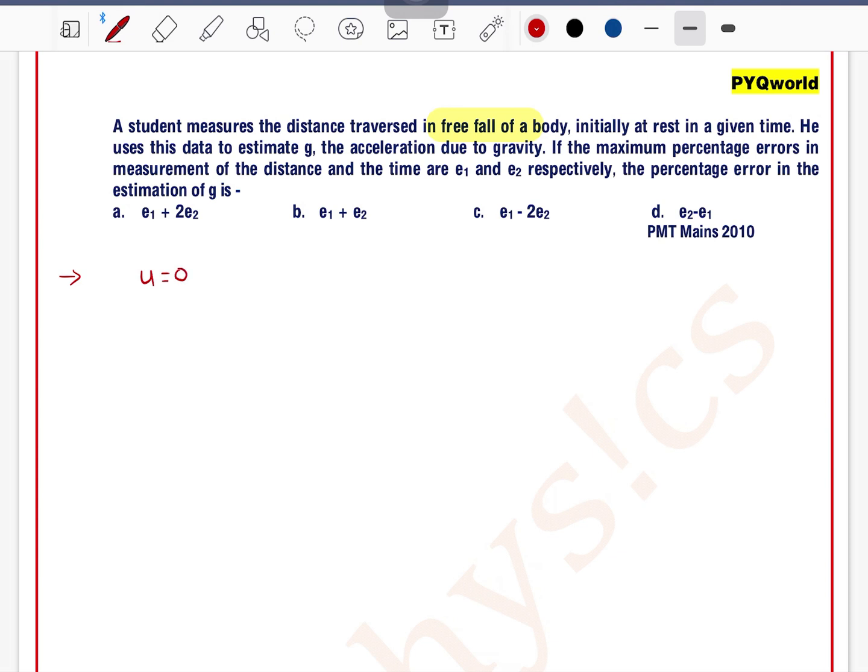He uses this data to estimate g, the acceleration due to gravity. If the maximum percentage error in measurement of distance and the time are e1 and e2 respectively, the percentage error in g is: